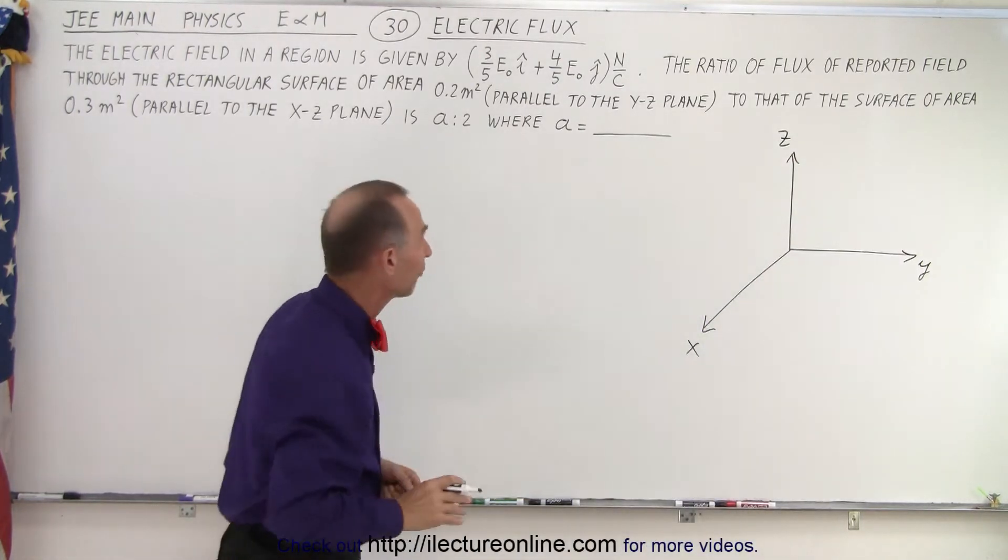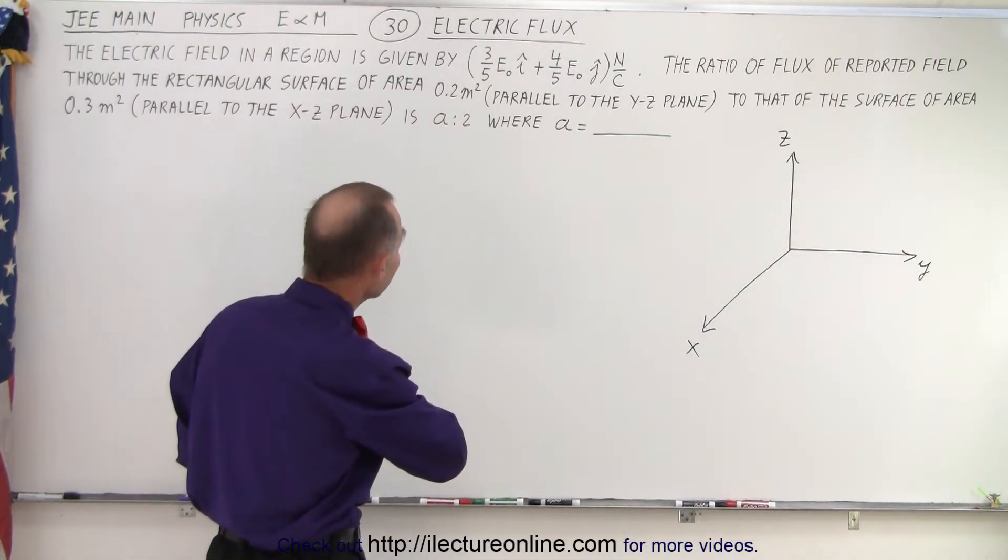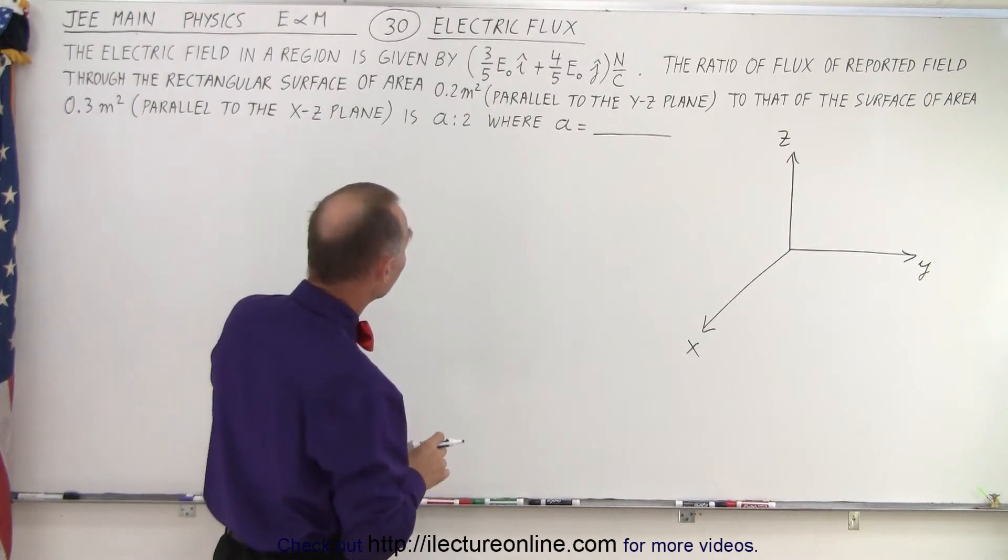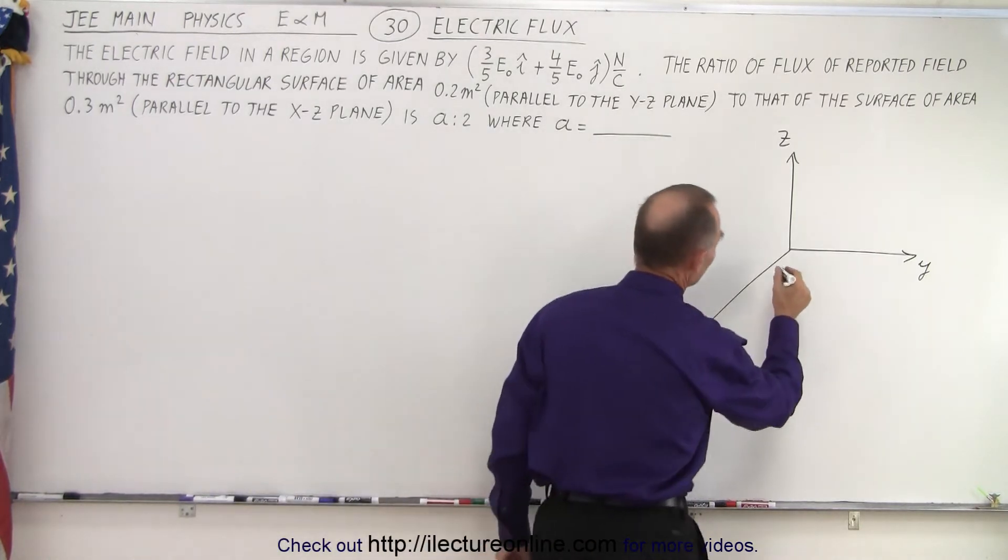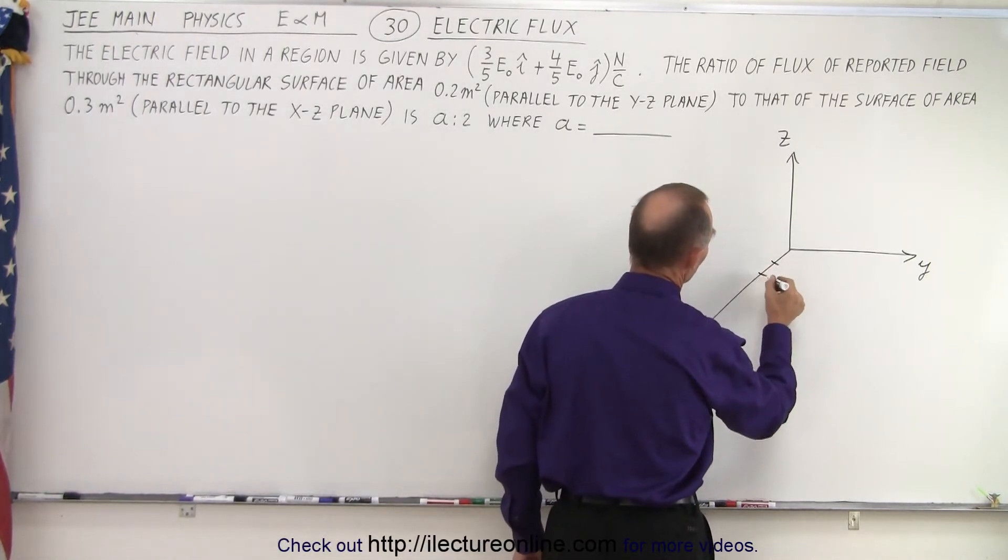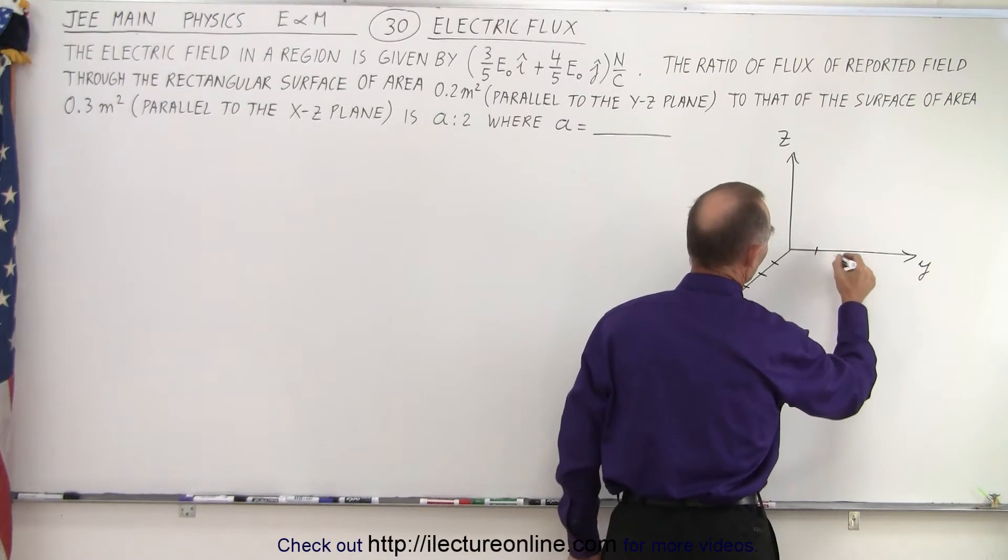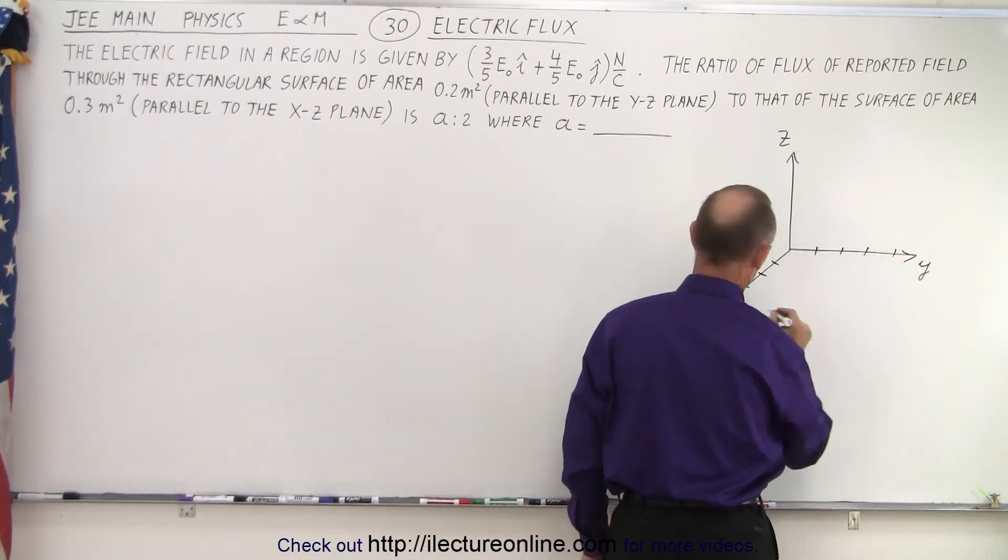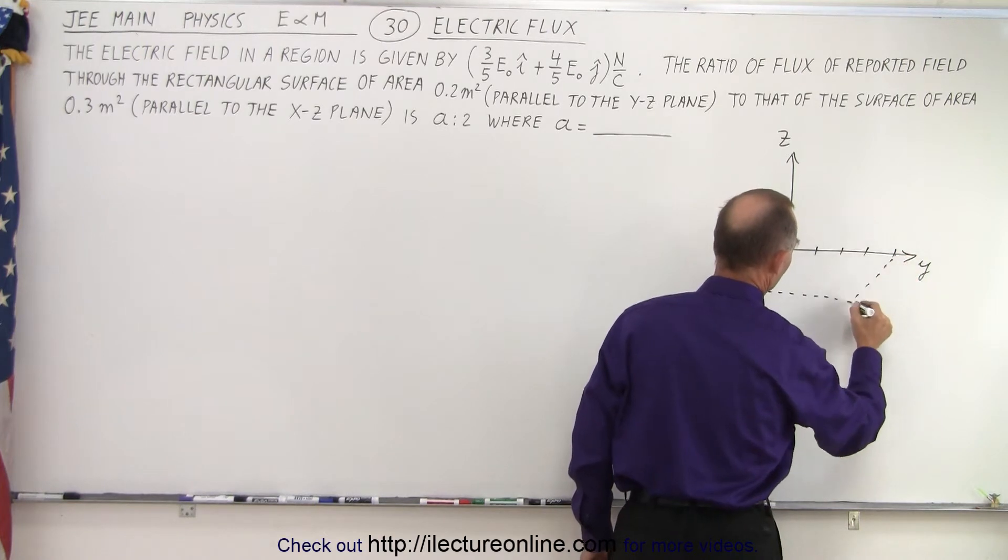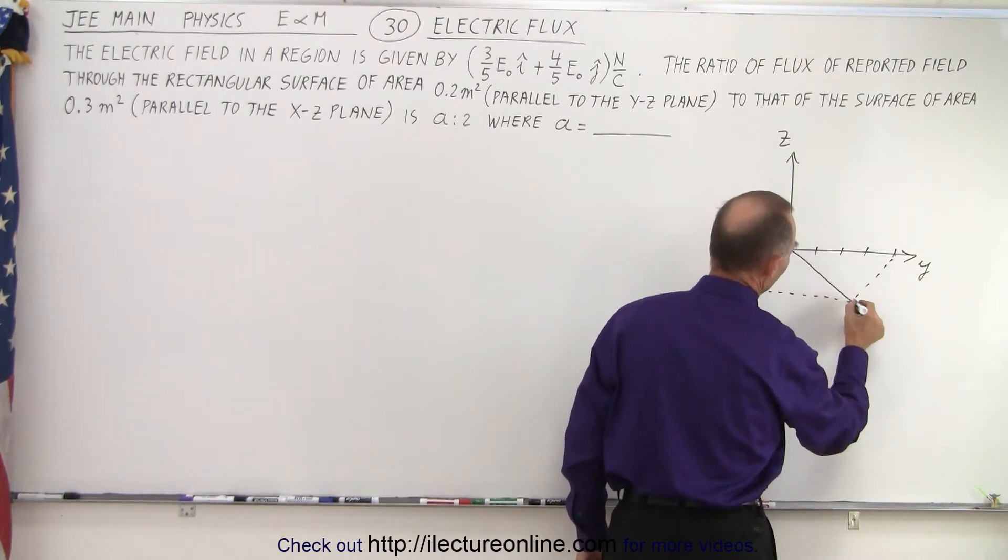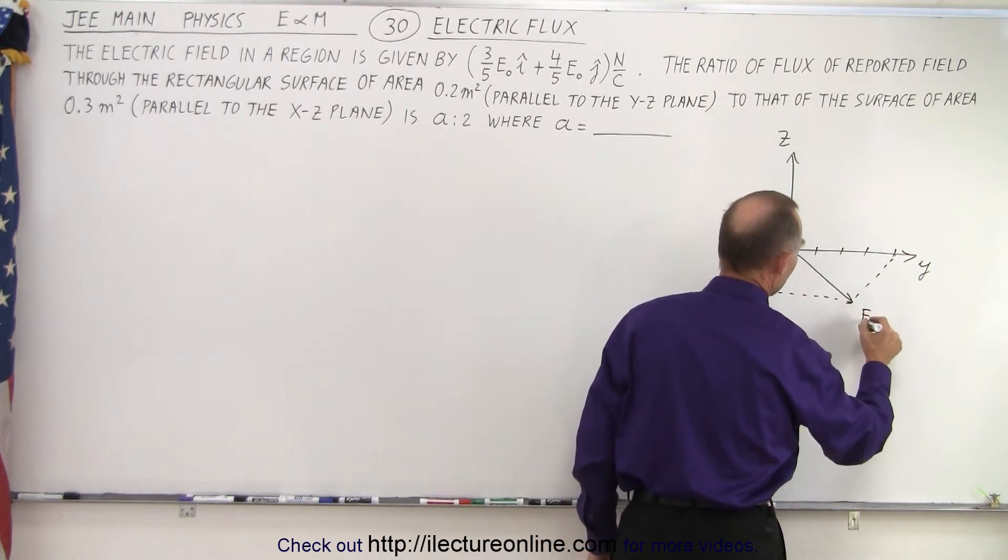Now let's draw that electric field. Well, it looks like it's in the XY plane because it only has an X and a Y component. So it's 3/5 E in the I direction, 4/5 E in the J direction. So let's do it like this. One, two, three. One, two, three, four. So we go like this and we go like this. And so this would be the vector.